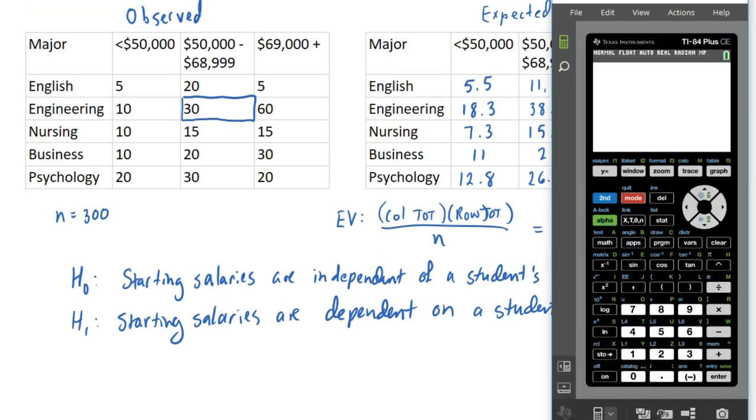So here's what we do. We're not going to go to stat first. For this test, we need to first go to the matrix menu. So you should see matrix above the button that says x to the minus 1 power over here on the left-hand side. So to get that, we're going to have to press second, and then press that button to bring up the matrix menu. And we are going to go over to edit, and we are going to edit the first matrix, matrix A.